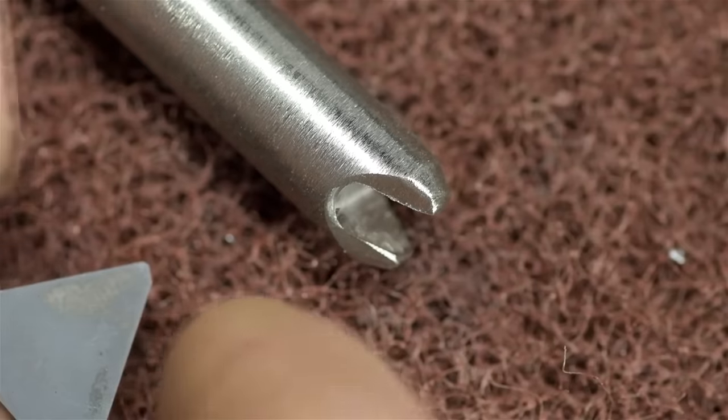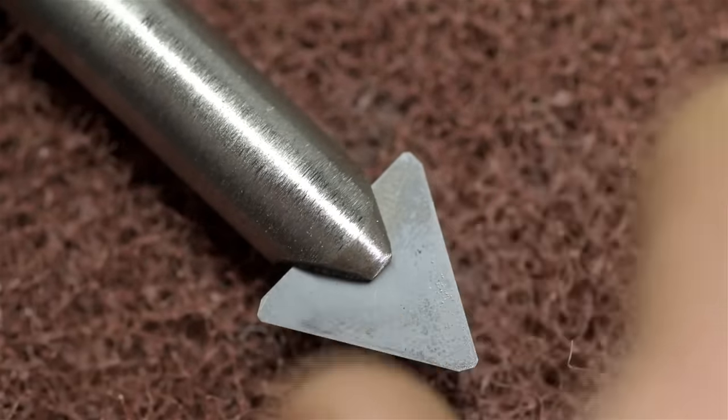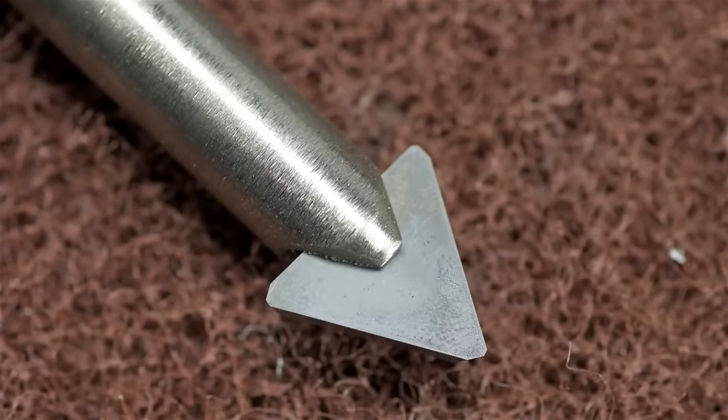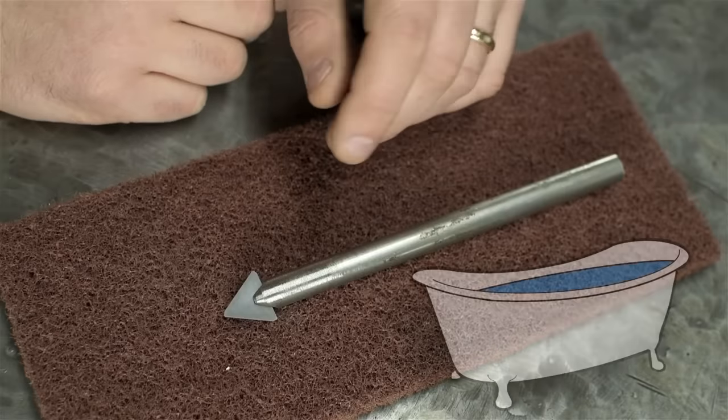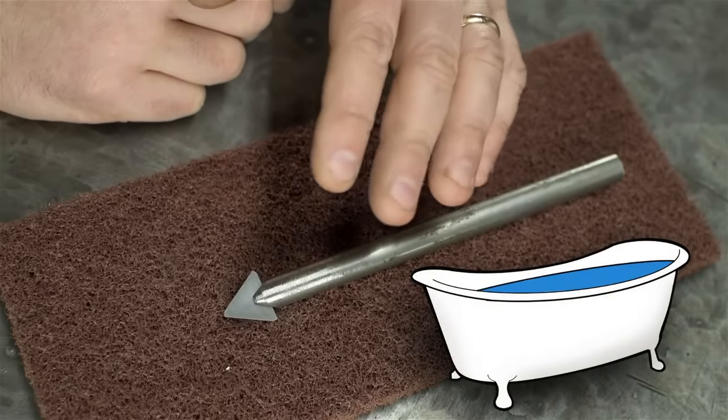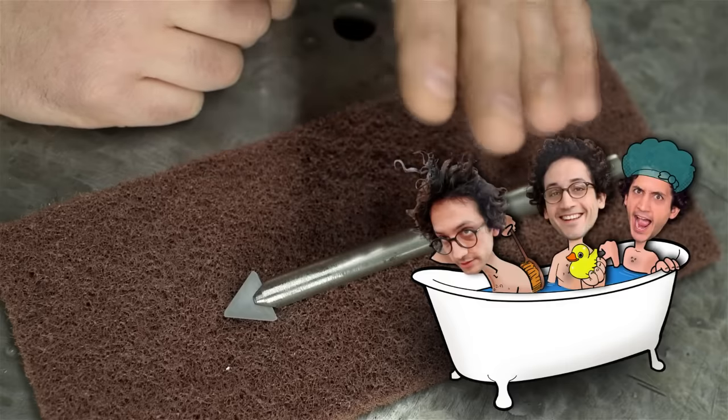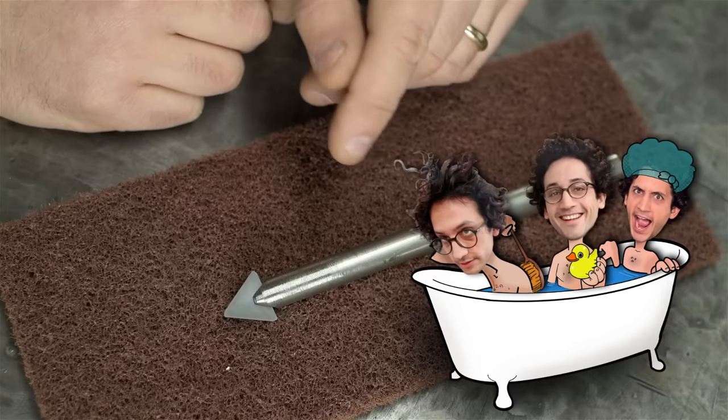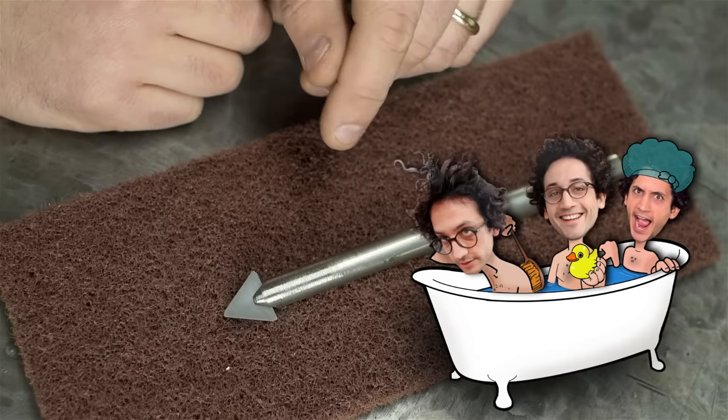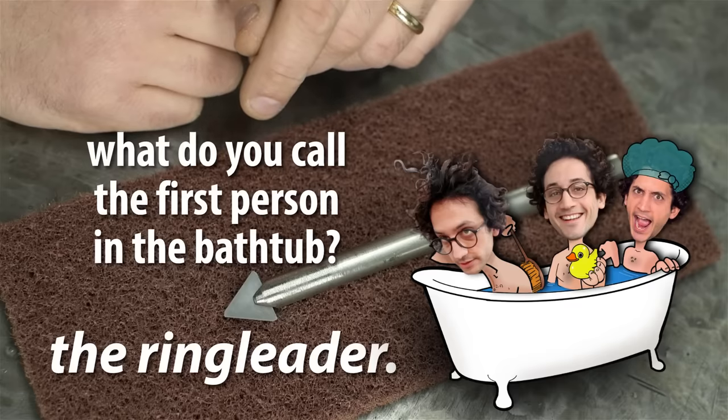So, imagine this. You turn the page and are rewarded with a full-sized, hand-drawn, line-art depiction of three grown men sitting in a bathtub. You know, one of those old cast-iron tubs with the legs. And the three guys have big smiles on their faces and they're all holding some kind of bathing or bathtub accessory. Takes up the whole page. Underneath the drawing, there's just a single question and the punchline. What do you call the first person in the bathtub? The ringleader.